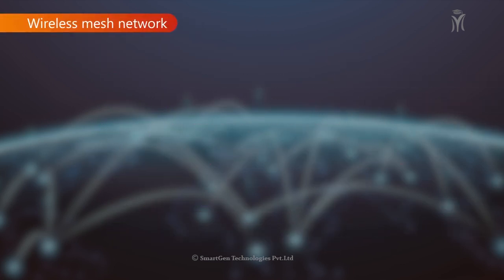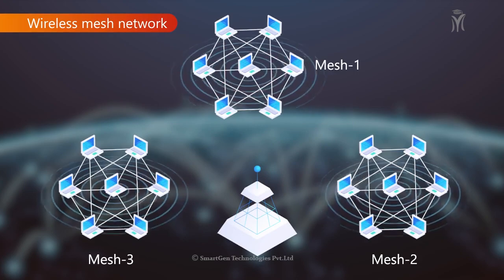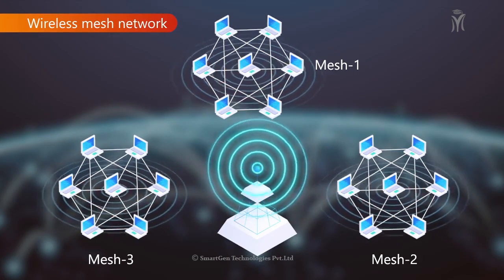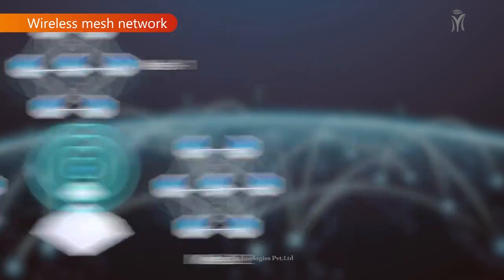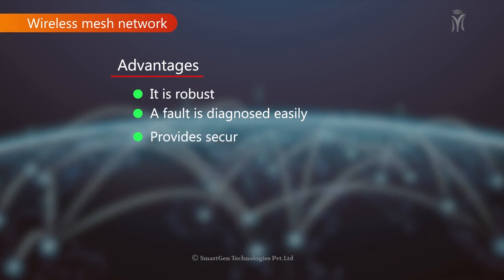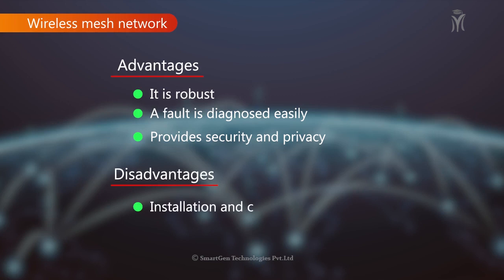Wireless Mesh Network is a wireless network of computing devices organized in a mesh topology. Advantages: it is robust, faults are diagnosed easily, and it provides security and privacy. Disadvantages: installation and configuration are difficult, and connectivity issues may arise.